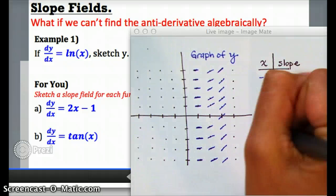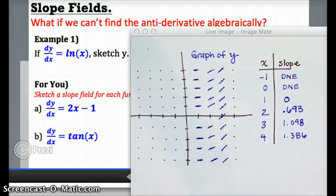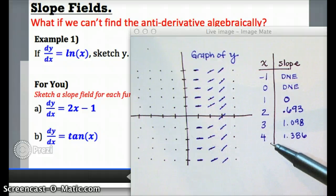Finally, we do the same thing for x equals 4, which gives me a slightly steeper slope, and I can go ahead and sketch in those slope lines at every point that has an x value of 4.